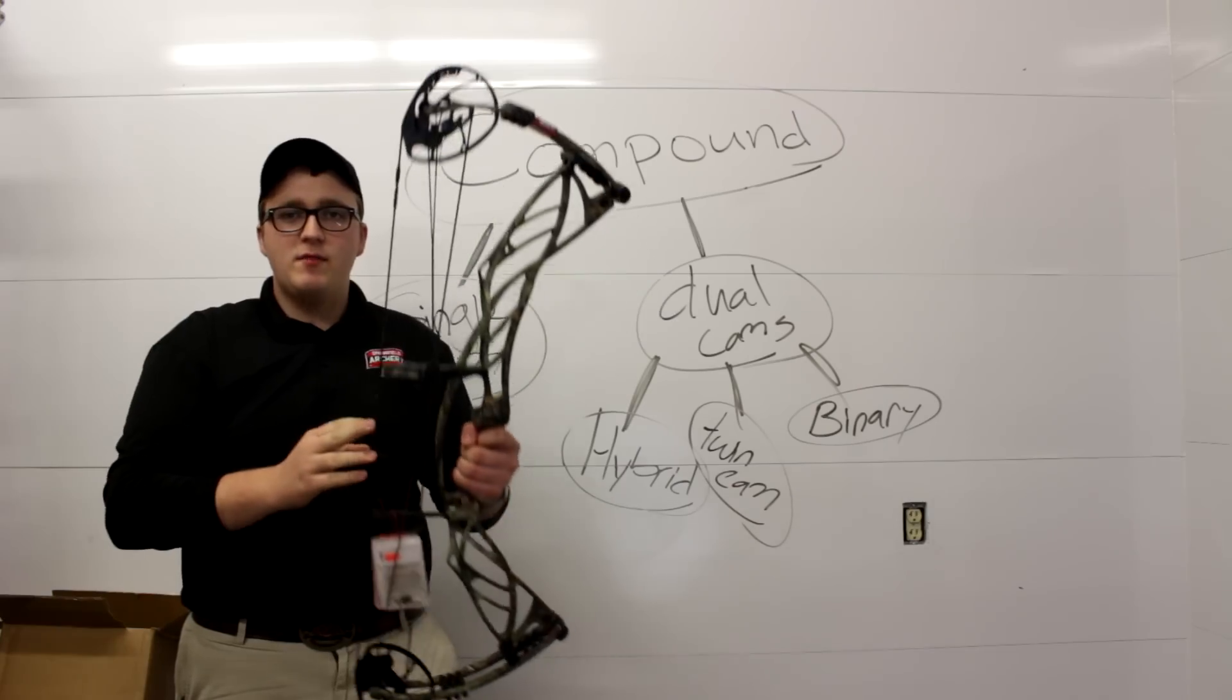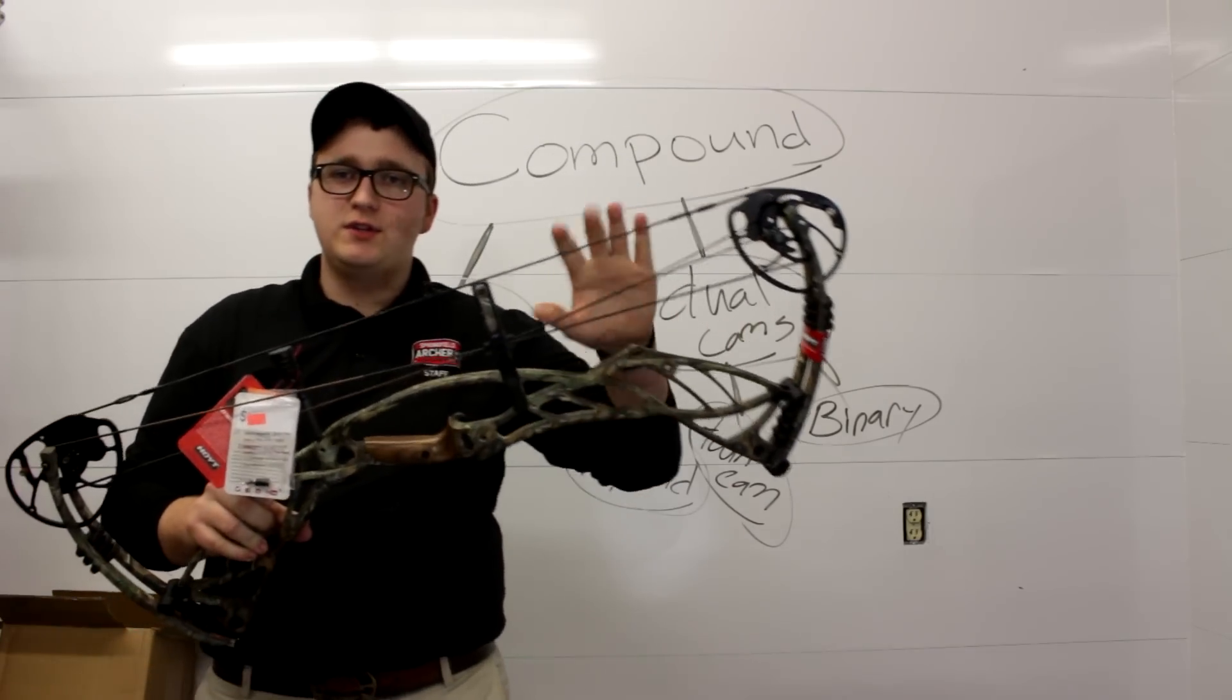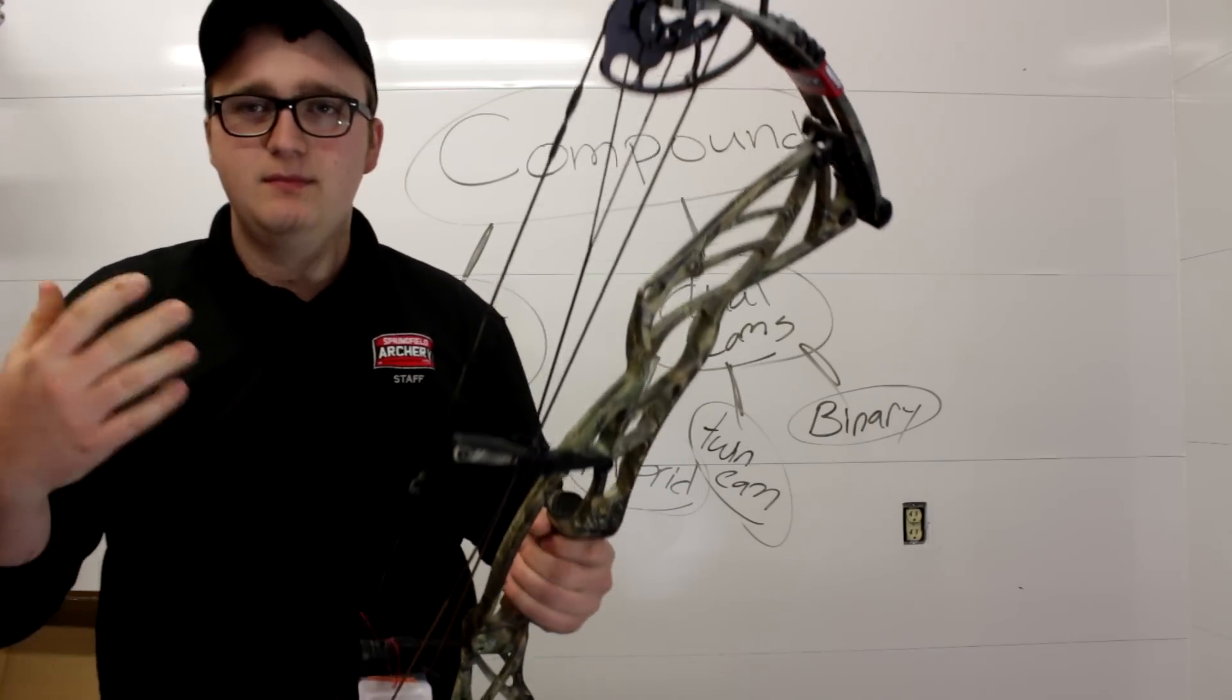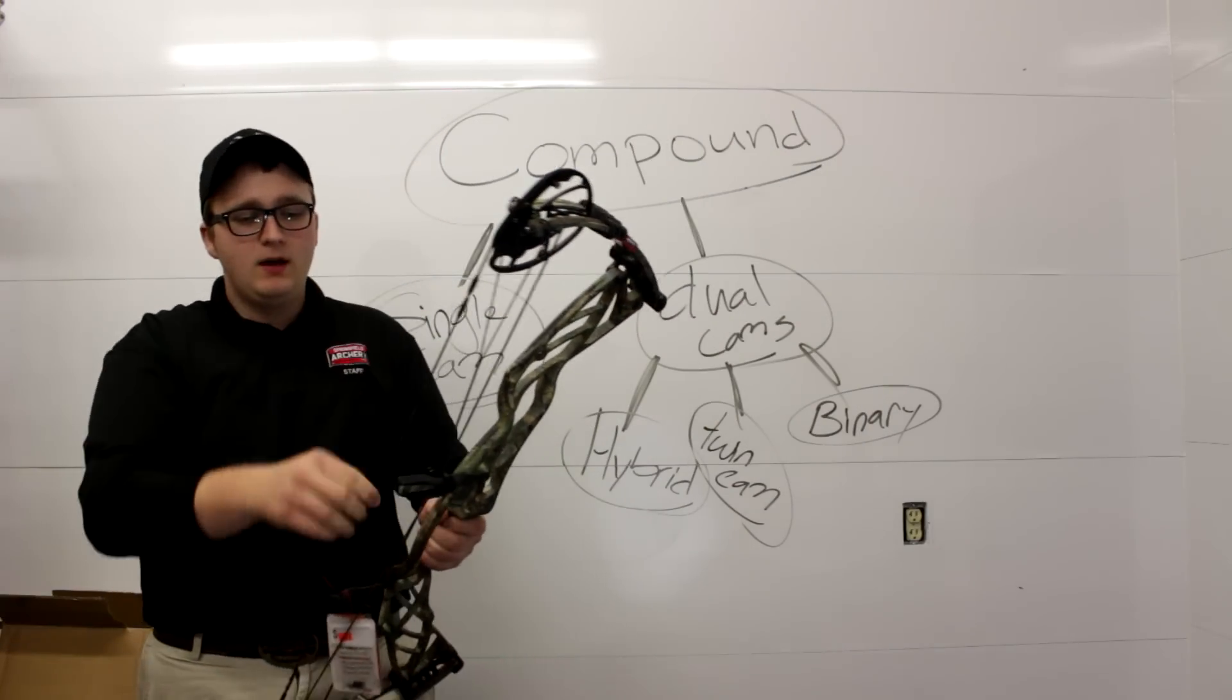So you've got your bow string. Everybody's pretty familiar with the bow string. It's what you knock your arrow on, release, deloop, peep, everything on your bow string.